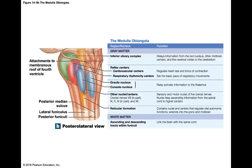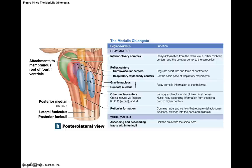The relay stations in the medulla are called the gracile nucleus and the cuneate nucleus. These receive sensory information traveling up in tracks and synapse here. The next neuron synapses on and goes up to the thalamus. In the central nervous system, we say nuclei because that's where cell bodies are found — an ascending sensory neuron will synapse in either the gracile or cuneate nucleus, and the next neuron ascends to the thalamus.